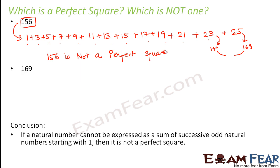So let's take one more example. So here we have 169. So how can you write 169? In the similar fashion, 1 plus 3 plus 5 plus 7 plus 9, 11, 13, 15, 17, 19, 21, 23 and 25. So till 25, if you add this, you get the sum exactly as 169.